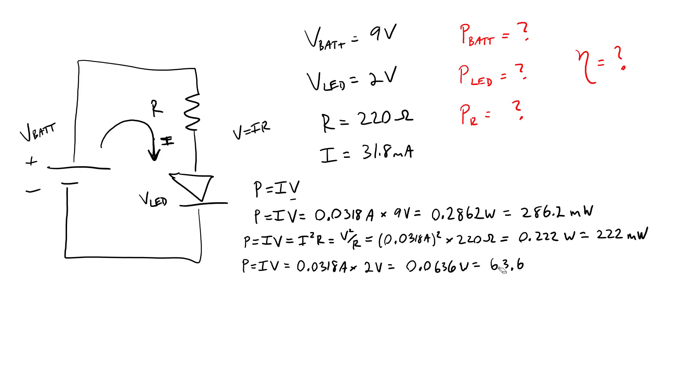So we can already tell just by glancing at these numbers that a lot of the power in this circuit is dissipated by the resistor, 222 milliwatts compared to only 63.6 milliwatts for the LED.